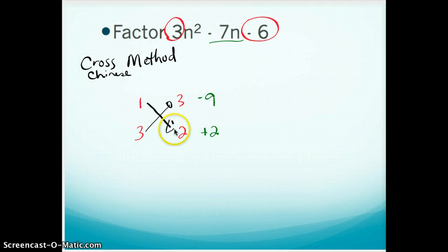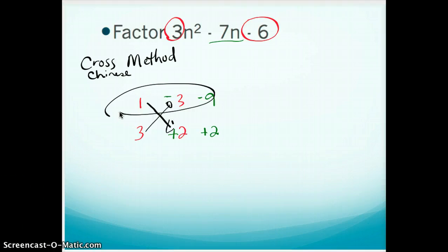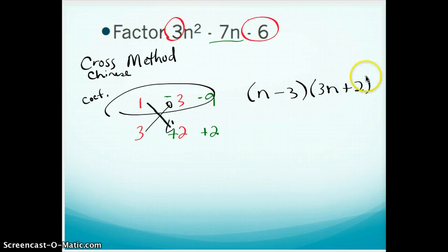To get that to happen, you would have to do a 1 times a positive 2 and a 3 times a negative 3. So what you would do with this, once you have these, these will tell you your coefficients to your binomials. And they would be in order. So this would say, this first one would say 1n, or just n, minus 3. The second one would tell you 3n plus 2. Here, so coefficients to your binomials.